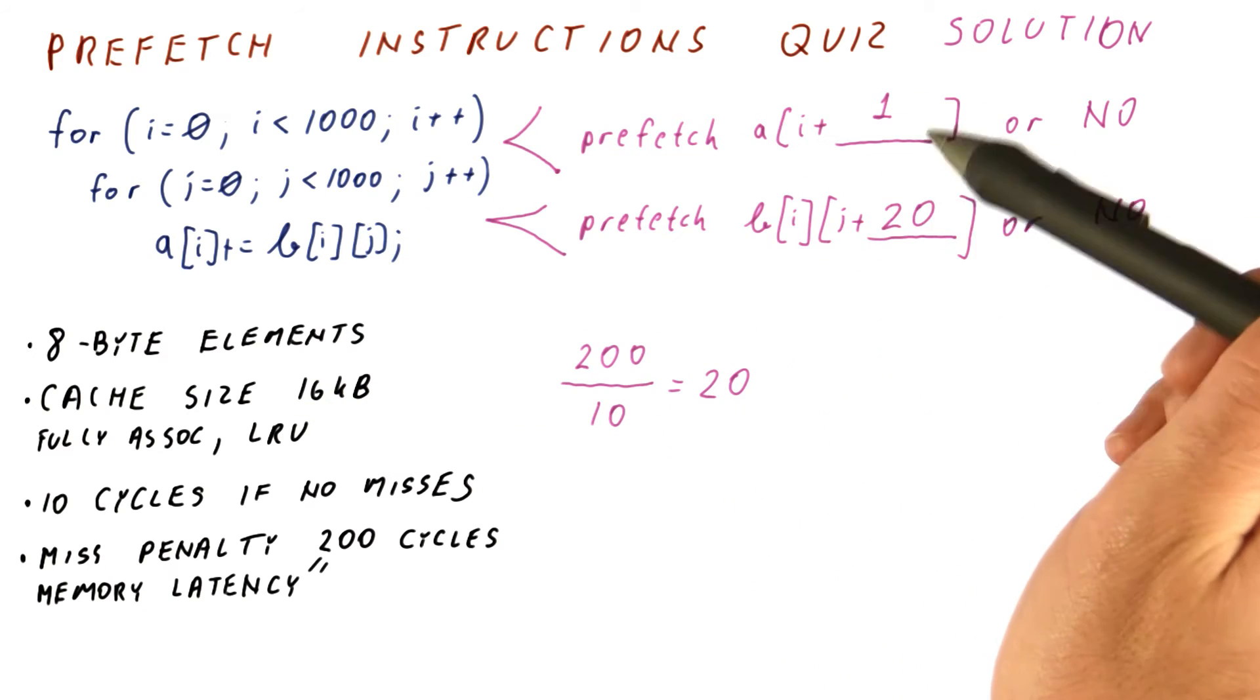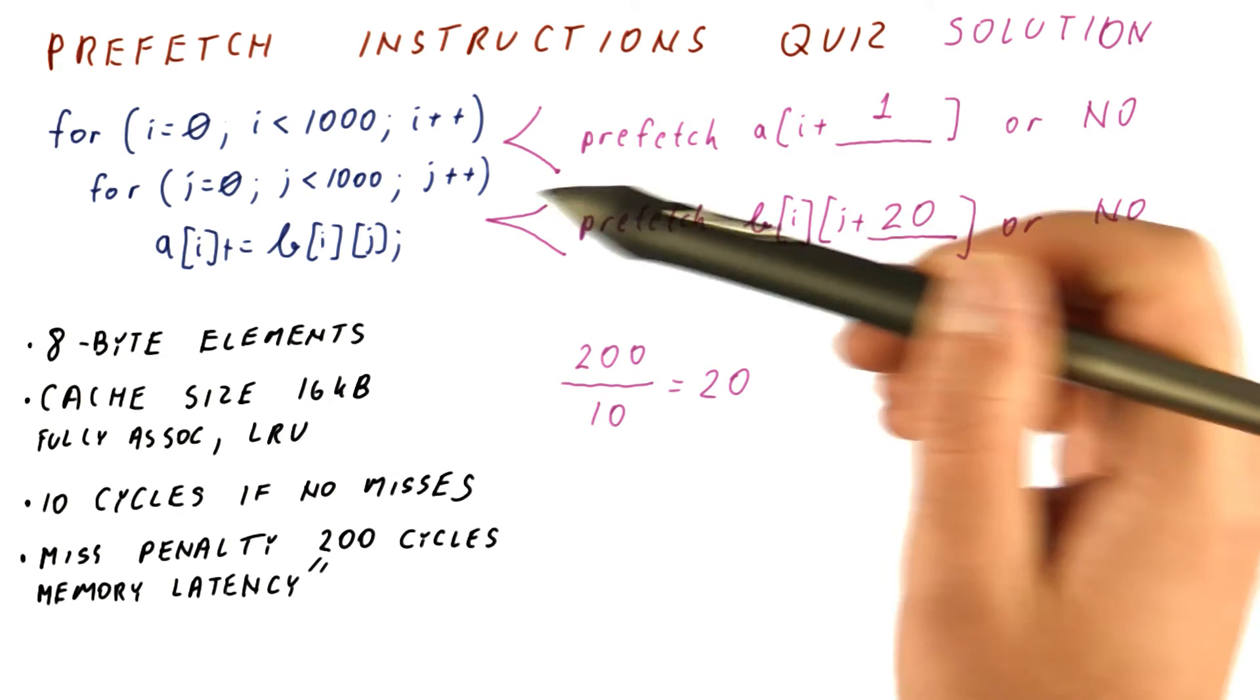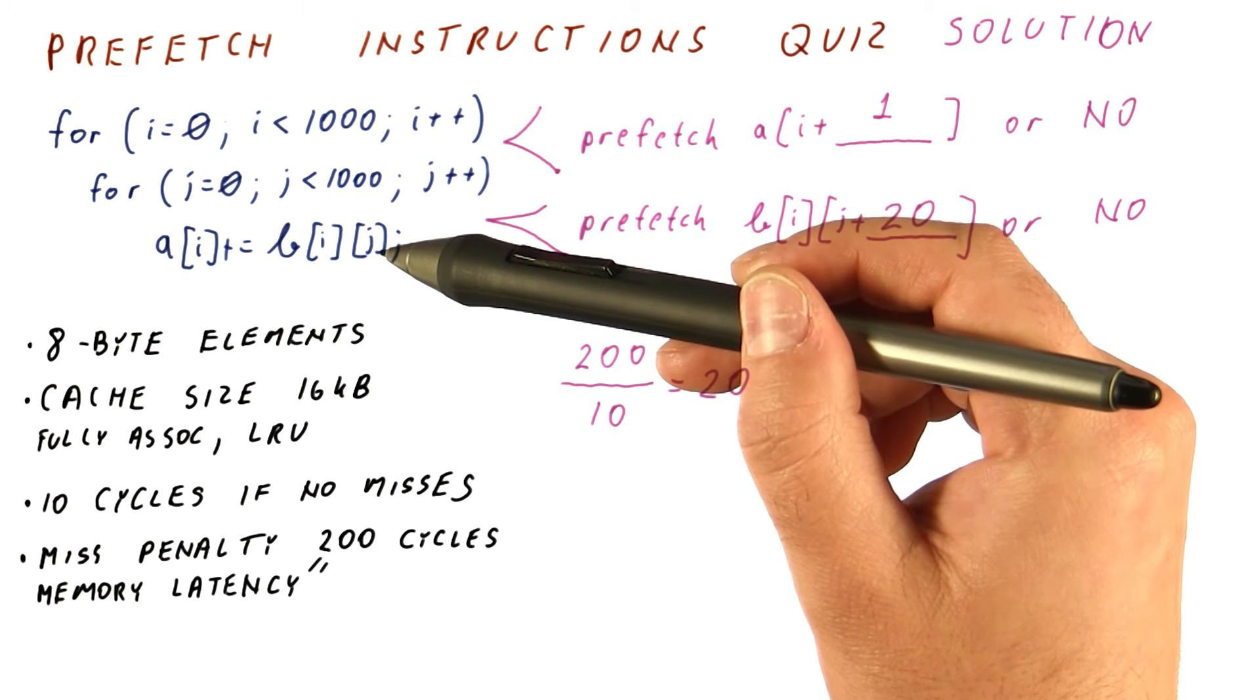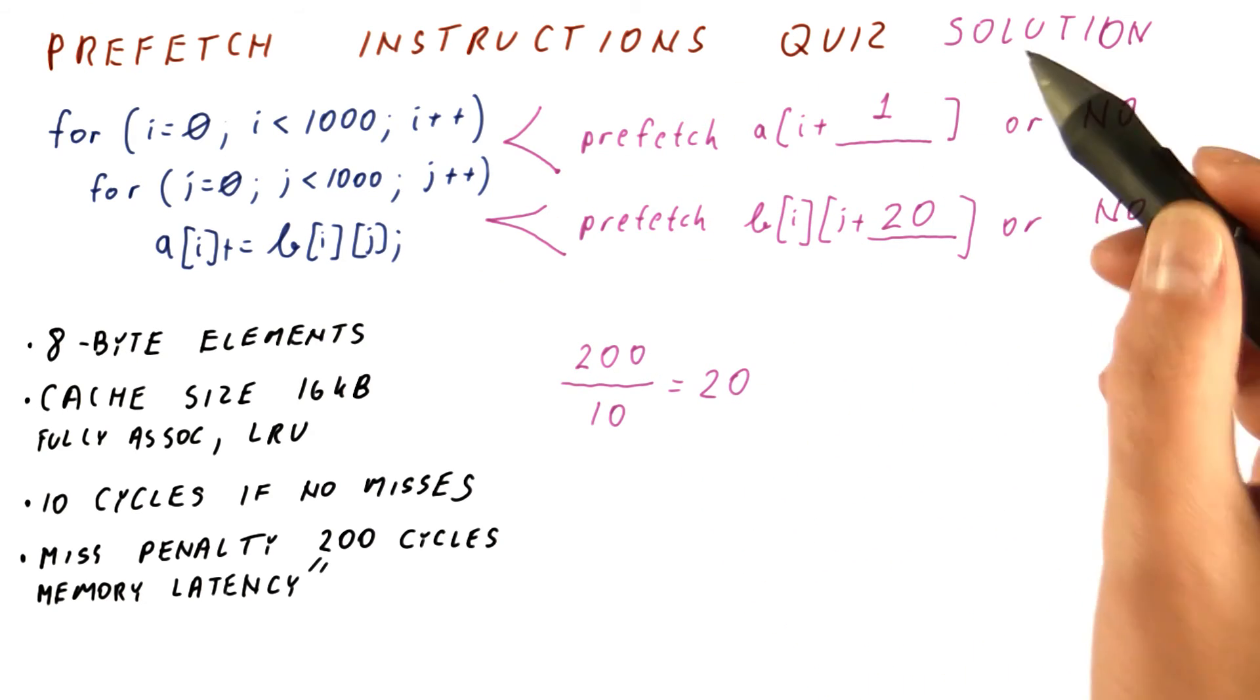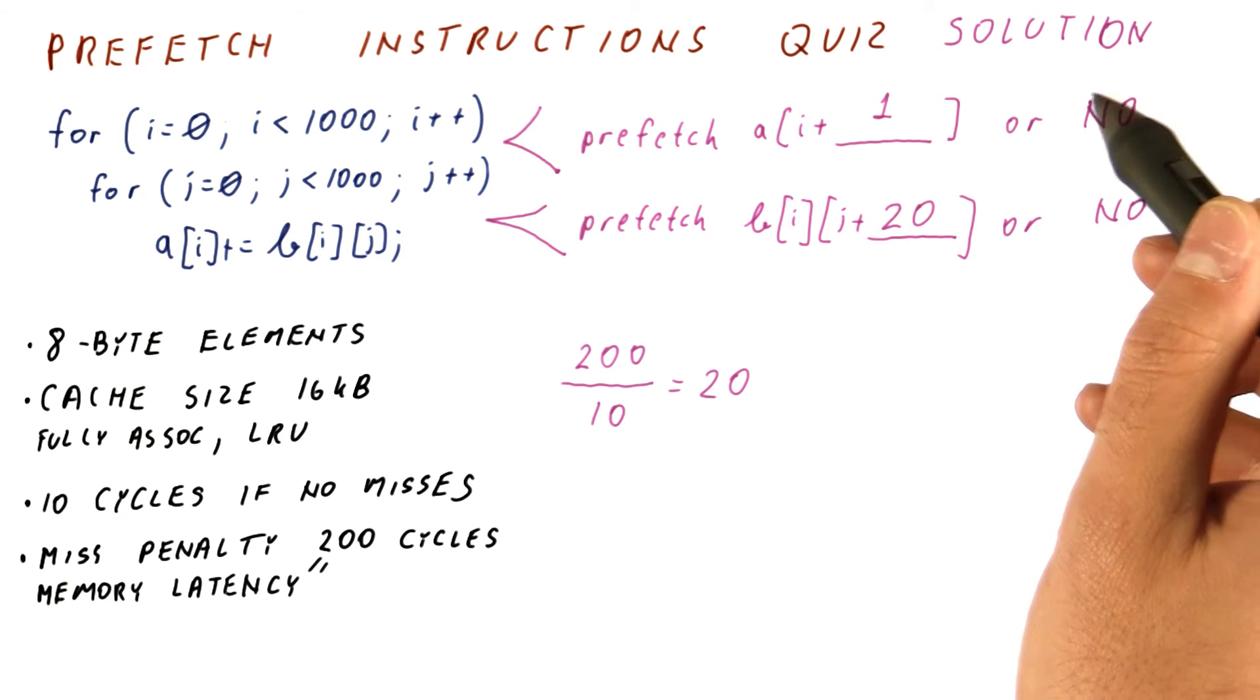If we prefetch here, the element of the A array that we prefetched will still be there when we get to the next iteration of the outer loop. So we should prefetch with I plus 1, and we should not select the other option.